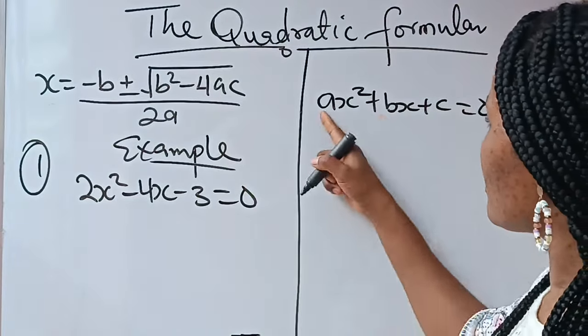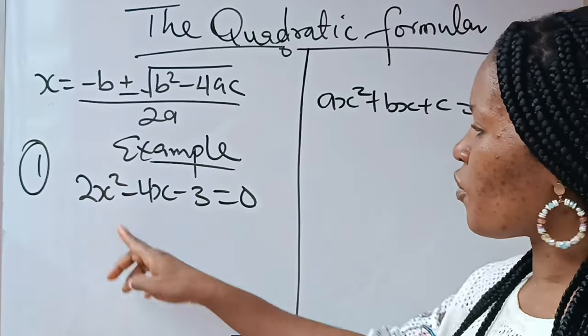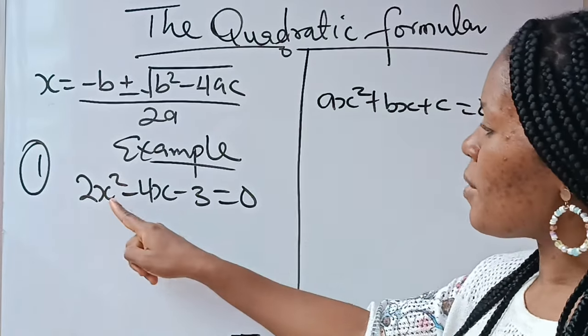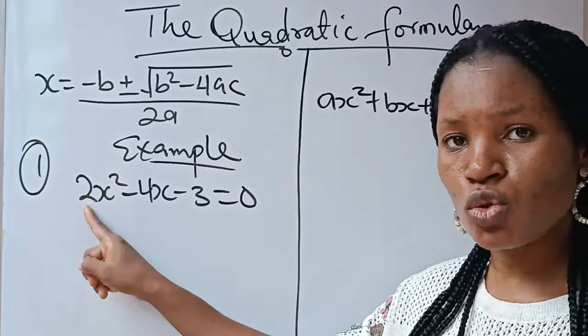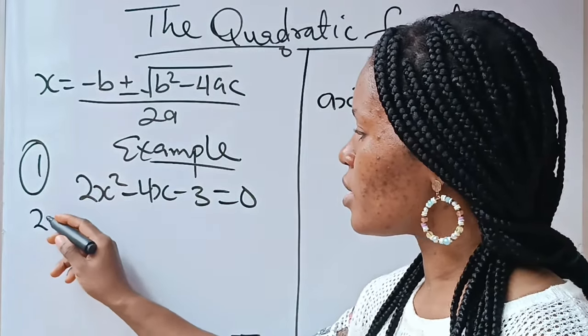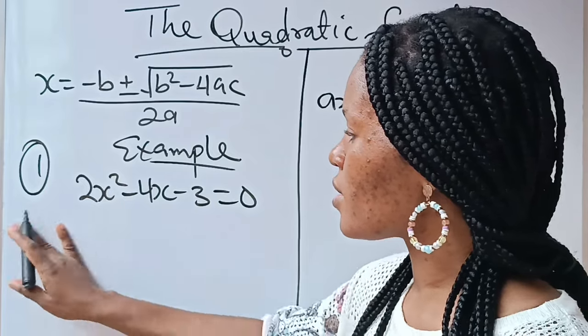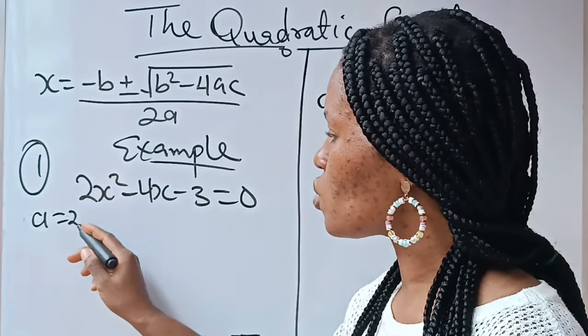If you look at this, when you compare this with this, the coefficient of your x² is your A. That means the coefficient of your x² here is 2. It means that A = 2.